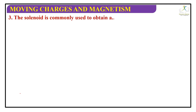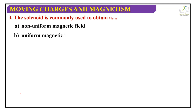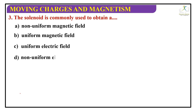Question 3: The solenoid is commonly used to obtain — non-uniform magnetic field, uniform magnetic field, uniform electric field, or non-uniform electric field? The correct answer is uniform magnetic field.